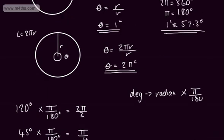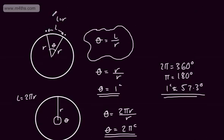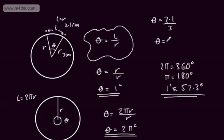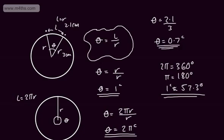Going back to our circle, if we have an arc length of 2.1 centimetres and a radius of 3 centimetres, we find theta in radians by dividing: theta equals 2.1 divided by 3, which gives 0.7 radians. So theta equals 0.7 radians is the size of the angle.